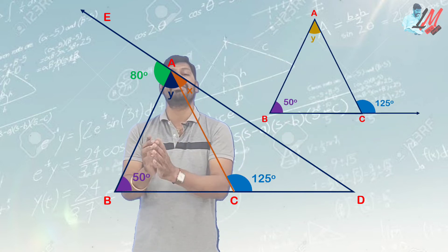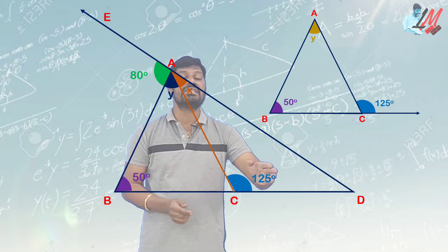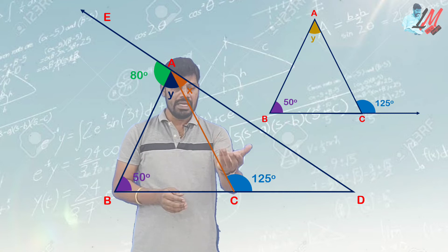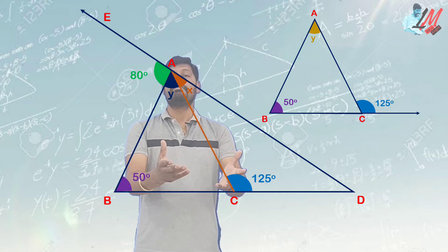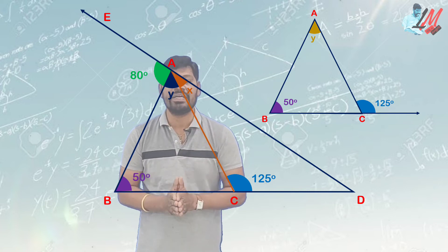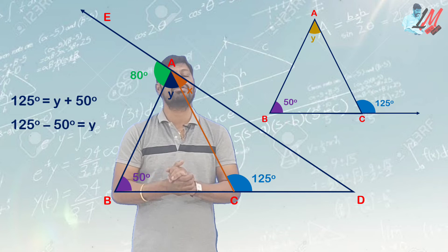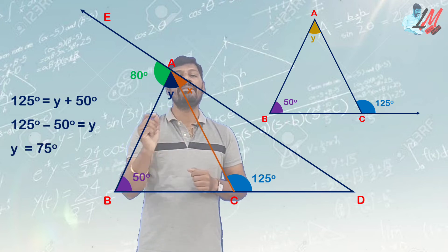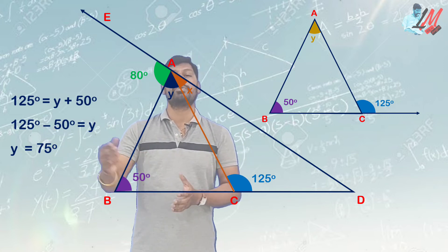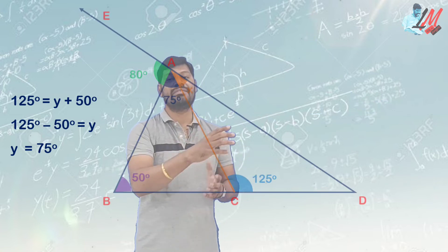We can see how we can extend the other angle. When we extend the side to the other side, we get an exterior angle of 125 degrees. We have already discussed the exterior angle property. That angle is equal to 125 degrees, and the sum of the two opposite interior angles equals 125. So, 125 is equal to y plus 15. According to the exterior angle property, y is equal to 75 degrees.